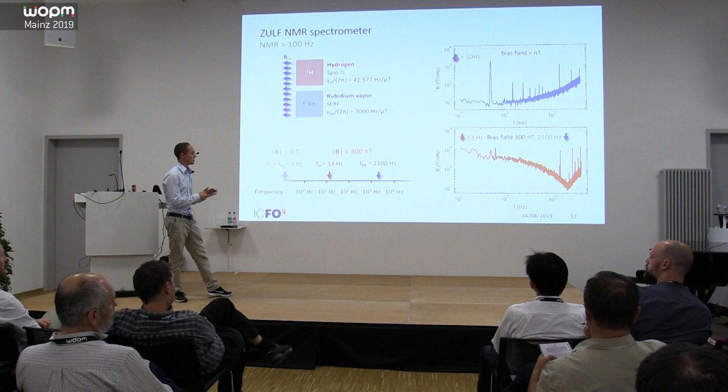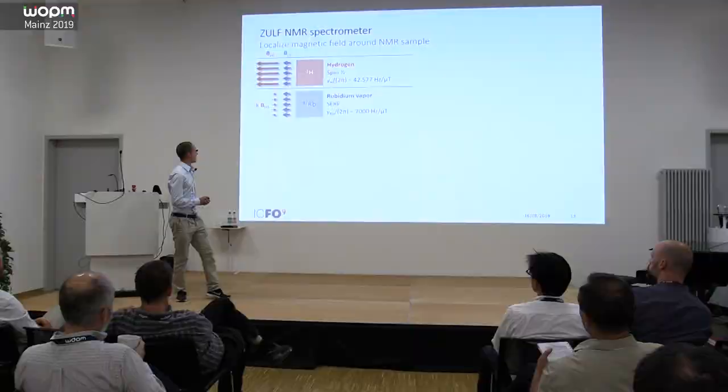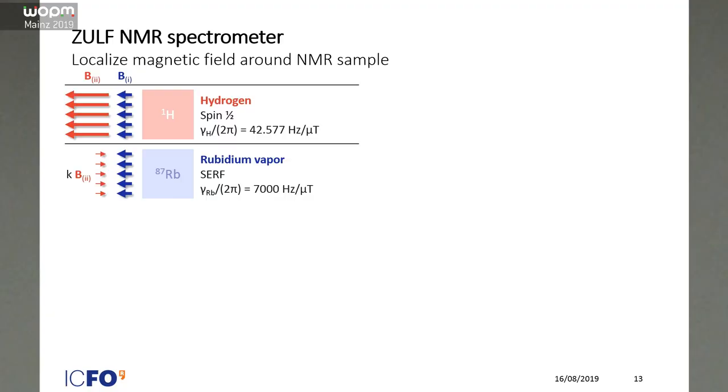The solution for that is actually quite simple, and it was invented, or there was a publication almost 15 years ago by Igor and Mike. The idea is if both have a different gyromagnetic ratio, you maybe just need two different magnetic fields. The idea is to have a very strong and very localized magnetic field, only at the position where the nuclear samples are, or the nuclear spins are, and on the other hand have a very weak magnetic field that is in resonance to the Larmor frequency of the nuclear spins.